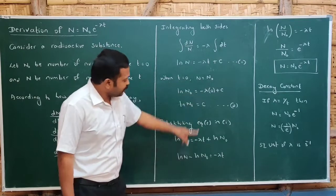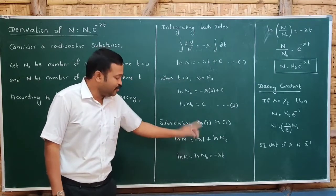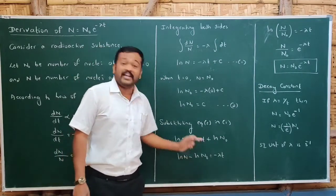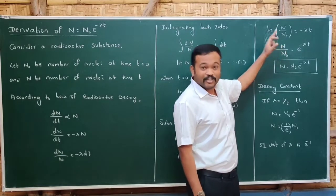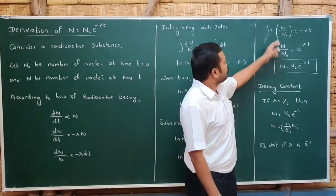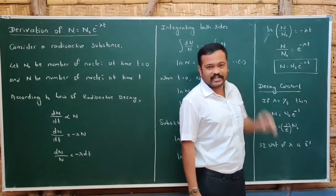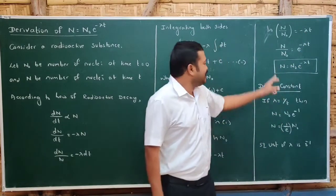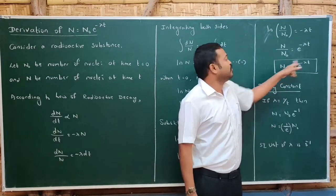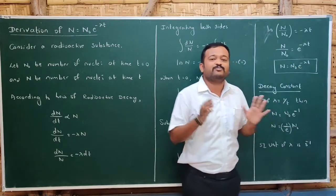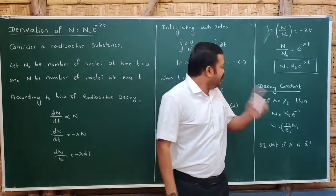Using the logarithm property ln(a) − ln(b) = ln(a/b), we get ln(N/N₀) = −λt. Taking the exponential of both sides: N/N₀ = e^(−λt), and finally N = N₀e^(−λt). Here N₀ is the initial number of nuclei, N is the number of nuclei at time t, lambda is the decay constant, and e indicates the decrease is exponential.